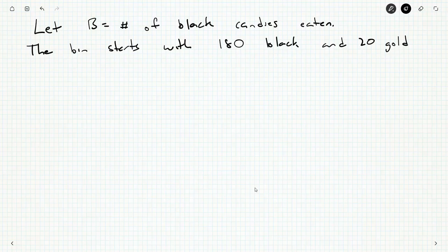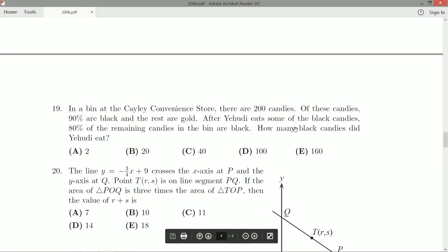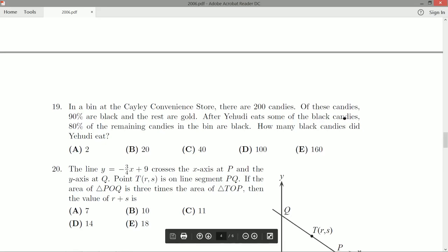Now the gold candies don't get eaten. Only the black candies are eaten. So after Yehudi eats these black candies, we get 180 minus B are left in the bin, and still 20 gold. And we know 80% of the remaining candies are black.